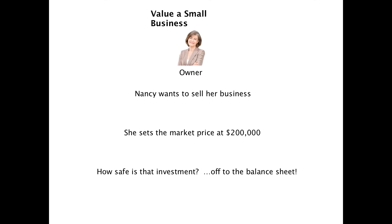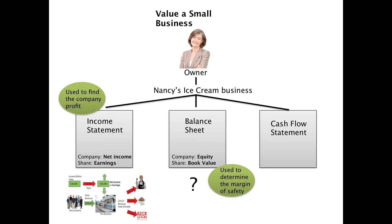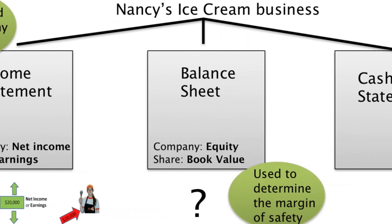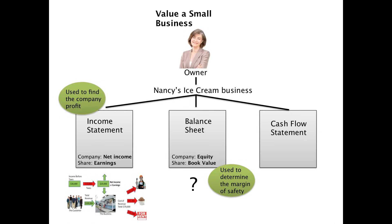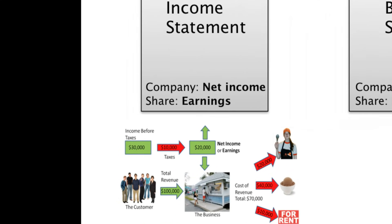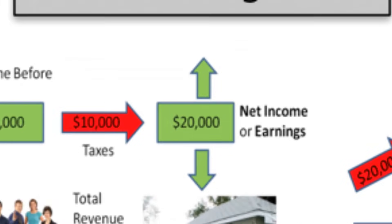Any business or corporation has three pieces of paper that account for all the things their business operates. The first one is the income statement. The next one is the balance sheet. And the third is the cash flow statement. I have a little square there representing each one of these documents. For Nancy's business, she has an income statement — that's essentially what we were doing in Lesson 2. It starts with total revenue at the top, and the bottom line figure is the net income.